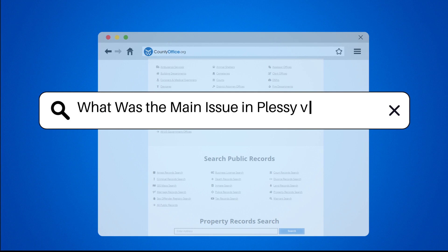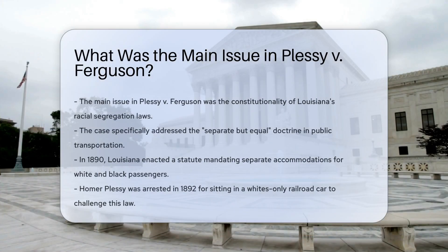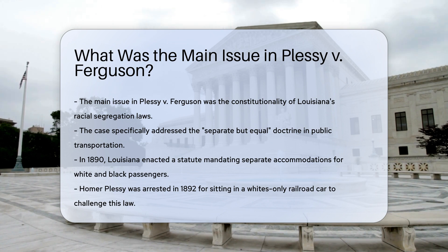What was the main issue in Plessy v. Ferguson? The main issue in Plessy v. Ferguson centered around the constitutionality of Louisiana's 'separate but equal' racial segregation laws, specifically in the context of public transportation. In 1890, Louisiana enacted a statute that required railroad companies to provide separate accommodations for white and black passengers, which led to the arrest of Homer Plessy in 1892.